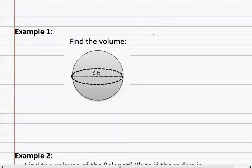In example one, remembering that volume equals four-thirds pi r cubed, we see that we need to have the radius. We were given the diameter of this sphere, so we now need to find the radius. Radius is diameter divided by two, so the radius equals nine feet divided by two, which equals 4.5 feet.